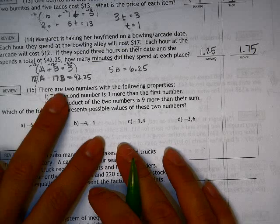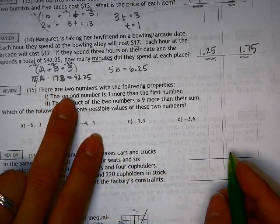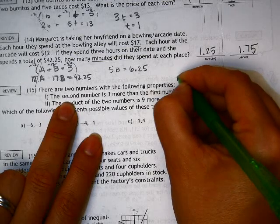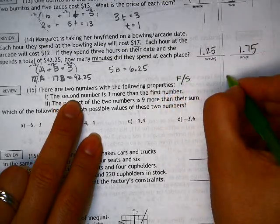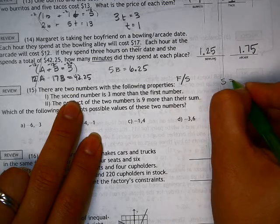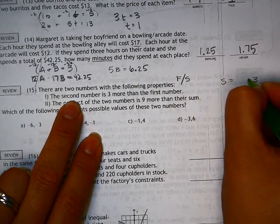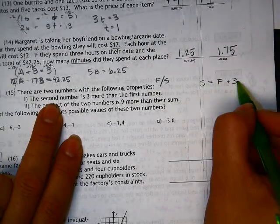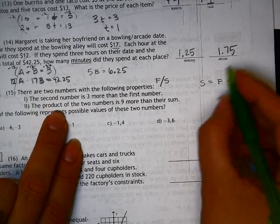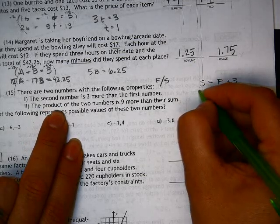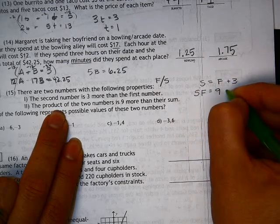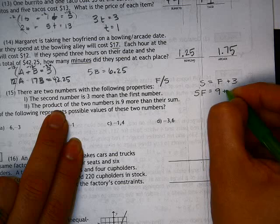Alright. Check, check, check. Let's try 15. So we have two numbers with the following properties. We're going to call it the first and the second. So the second number is 3 more than the first. Did you catch that? The second number is 3 more than the first. The product of the two numbers is 9 more than their sum.